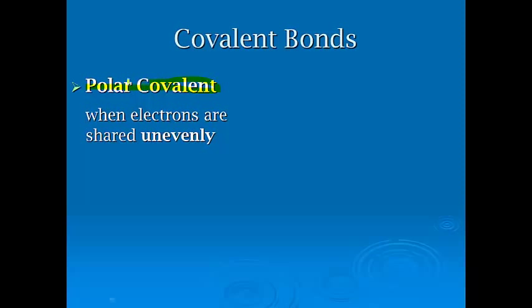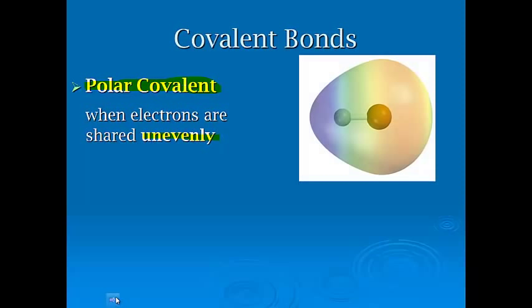When you have a polar covalent bond, polar means extremes. Think of the North and South Pole. These are when electrons are shared unevenly. If you think back to last unit, we talked about electronegativity. We're going to talk about electronegativity here in just a minute again. Electronegativity is the ability to attract electrons when they're in a compound.